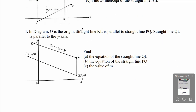Question 4. In the diagram, O is the origin. Straight line KL is parallel to the straight line PQ. Straight line QL is parallel to the Y axis. Part A: find the equation of straight line QL. Since QL is parallel to the Y axis, it is a vertical line with equation X equals to something. The X coordinate of Q is 4, so the equation is X equals to 4. The answer for part A is X equals to 4.